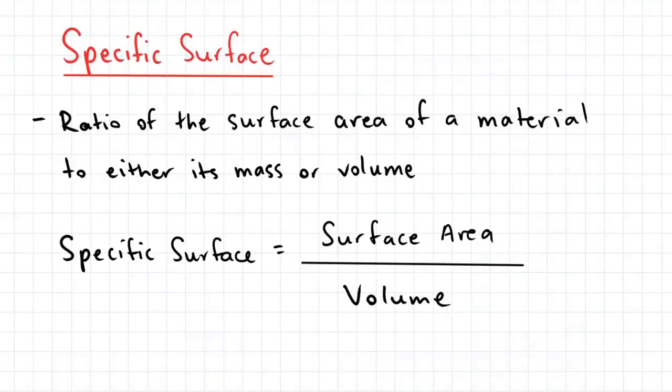Hey guys, the objective of today's video is to talk about the specific surface of soils. The specific surface of a material is defined as the ratio of the surface area to the mass or volume of a material.